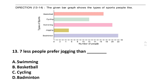Questions 13 and 14 use a bar graph showing the types of sports people like. On the bar graph, the number of people is on one axis and types of sports on the other. Question 13: Seven less people prefer jogging than which sport? Total 5 people like jogging, so 5 plus 7 is 12. Which sport do 12 people like? That is cycling — cycling has 12. So, 7 less people prefer jogging than cycling. Answer is Option C: Cycling.